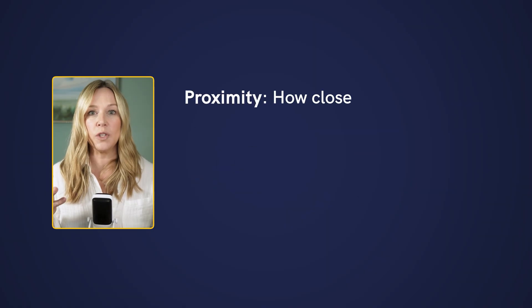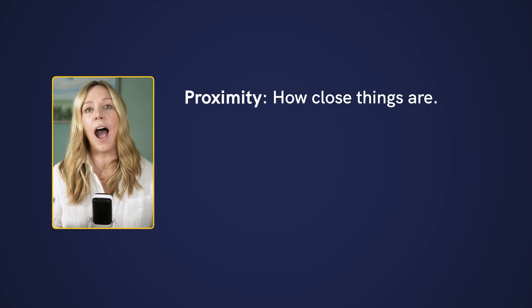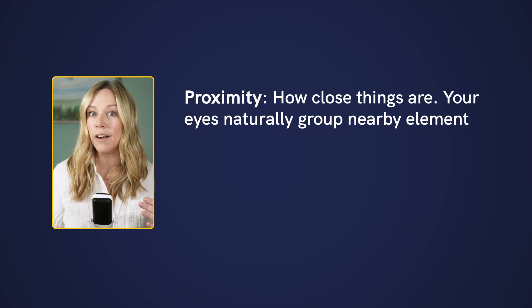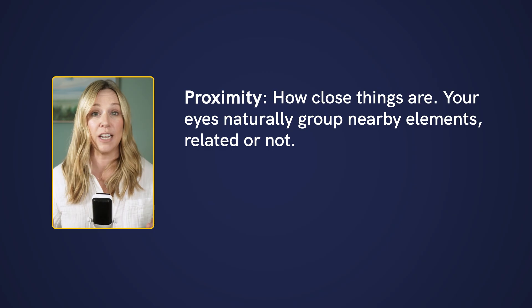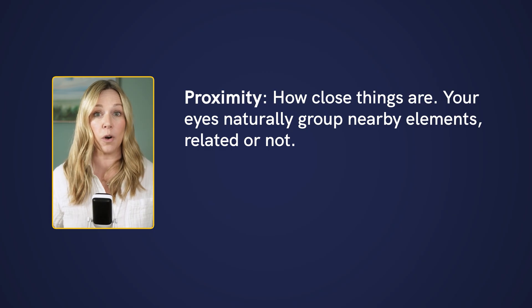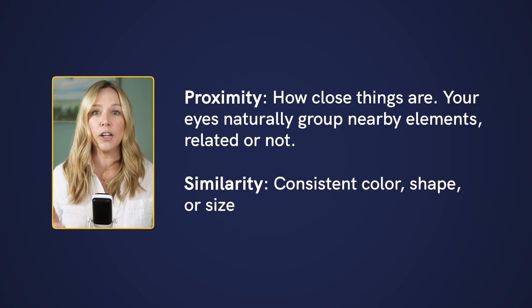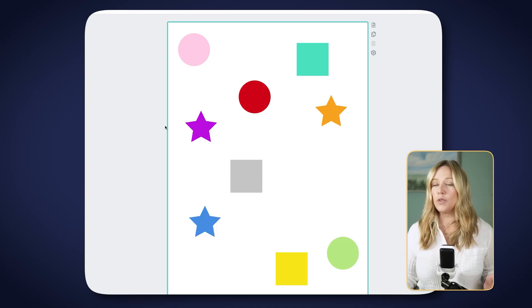Proximity is when things are close together — your eye naturally wants to group anything that's close together, whether it's related or not. Similarity refers to things that are the same in color, shape, or size. So let's take a look at a couple of examples to understand what doesn't work when it comes to proximity and similarity, and what you can do to leverage these principles to make your infographic look great.